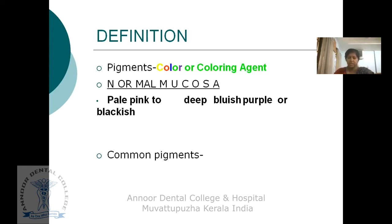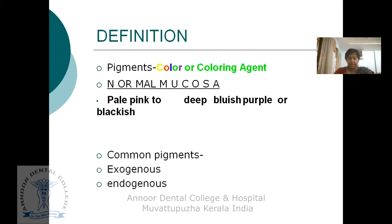Oral pigmentation may be exogenous or endogenous. The color of oral pigmentation can vary depending upon the quantity, depth, or location of the pigment. Generally, surface pigmentation shows brown color, and those located deeper are blue or black in color.